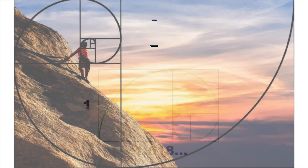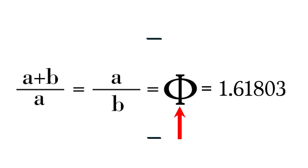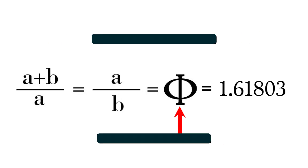Defined, the Golden Ratio is as follows: two quantities are in the Golden Ratio if their ratio is the same as the ratio of their sum to the larger of the two quantities. If you're not a mathematician or a physicist, that probably sounds too complicated, so perhaps this mathematical formula will help. The formula for the Golden Ratio is A plus B over A equals A over B equals Phi, where Phi is equal to 1.6180339887, and on and on the numbers go.